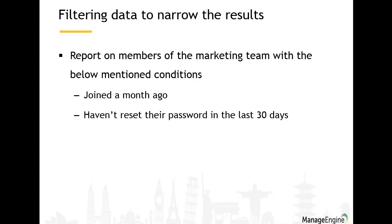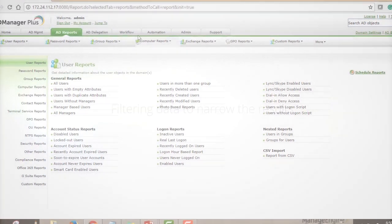For the first example — filtering data to narrow the results — assume your organization has five product divisions A, B, C, D, and E, each with its own organizational unit. You want to create a report that gives details of marketers in these five OUs who joined more than a month ago and haven't reset their password in the last 30 days, with department set to marketing.